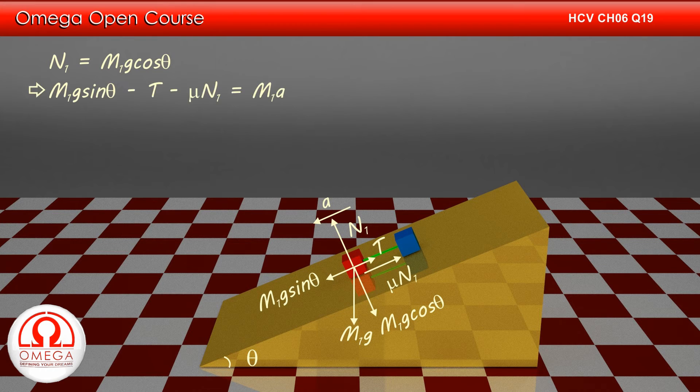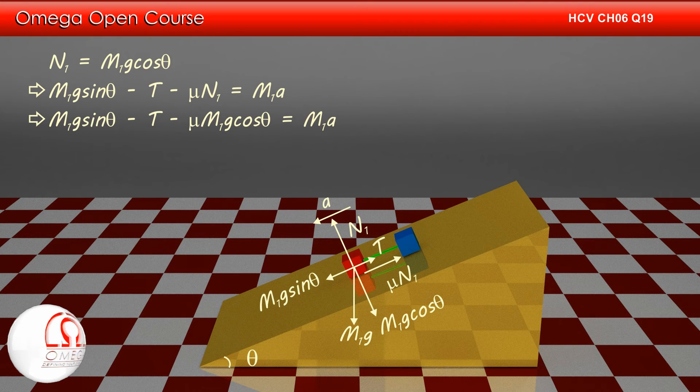Writing the equation of motion along the incline, we get M1 g sin theta minus T minus mu N1 equals M1 a. Putting the value of N1, we get M1 g sin theta minus T minus mu M1 g cos theta equals M1 a.